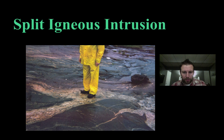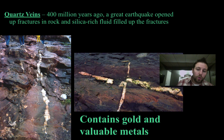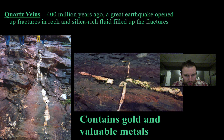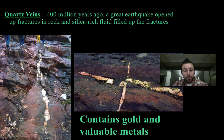Here's another example where the intrusion comes through and splits. Quartz veins, and actually many different mineral veins, form in a similar way — this molten material comes up and through, cools and hardens in place. Sometimes these veins can contain valuable metals that we mine for.